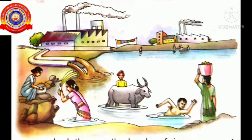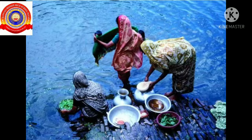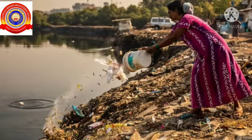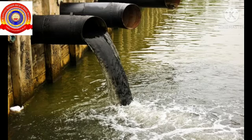Through many ways water is polluted. For example: when we wash clothes on the banks of rivers or ponds, when we bathe cattle in ponds or rivers, when we throw garbage into the river, and when factories release waste materials into the river.